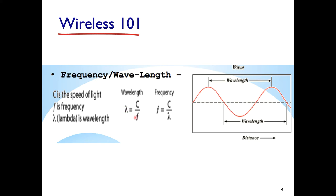Wavelength is related to the frequency of the signal. If you increase the frequency, the wavelength decreases — the peaks are closer together — and vice versa. So frequency and wavelength are inversely proportional, linked by the constant C, which is the speed of light. This relationship holds for electromagnetic signals traveling through both wire and wireless media.